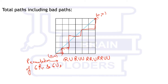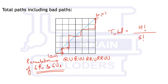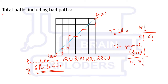It means if we write any permutation of 6 R's and 6 U's, we will find a path from (0,0) to (n,n). So the total number of permutations of 6 R's and 6 U's is equal to 12 factorial over 6 factorial times 6 factorial — accounting for 6 repeated R's and 6 repeated U's. In general, this is (2n)! over n! times n!, and this is the total number of paths including bad paths.